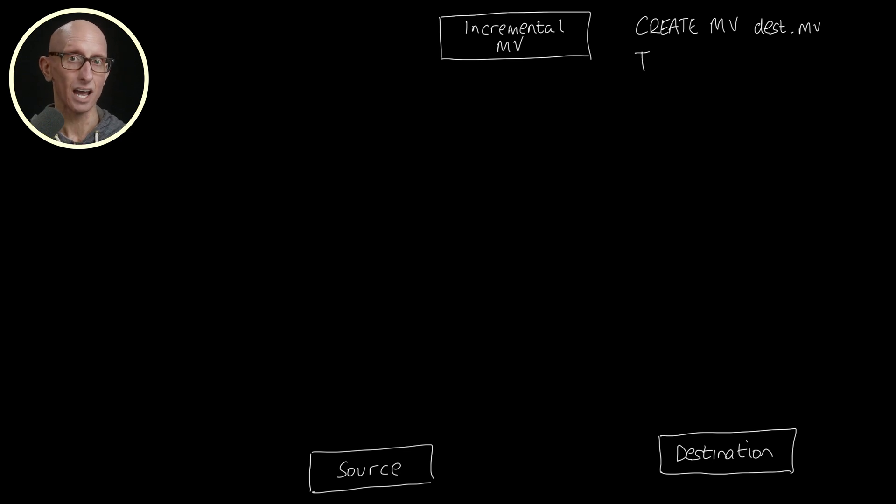Let's start with incremental materialized views. So we have our materialized view at the top, and then at the bottom we have our source and destination tables. And then let's imagine that we create our materialized view, we give it a name, we say where the destination table is, so destination in this case, and then we define our query reading from the source table.